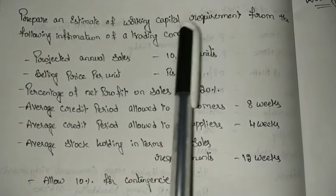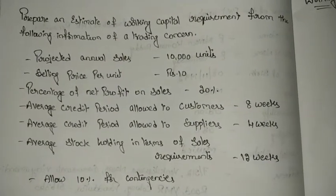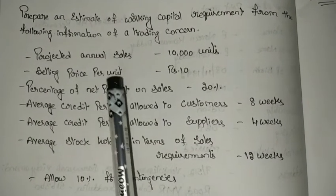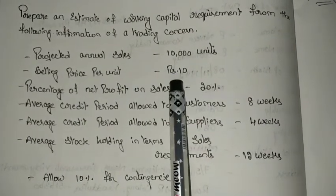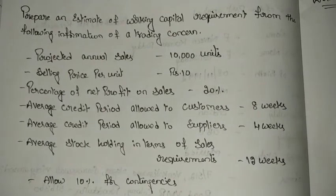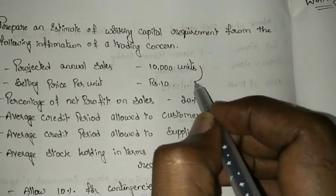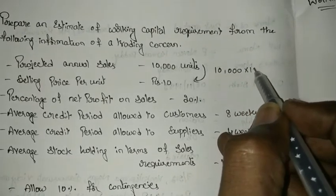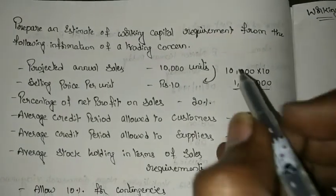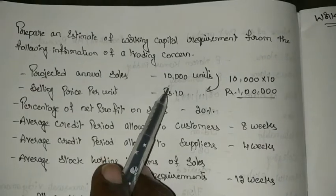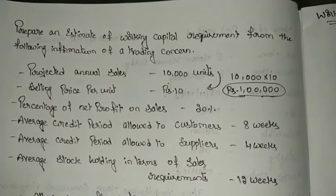Here, prepare an estimate of working capital requirement from the following information of a trading concern — not a manufacturing concern. The given information is: projected annual sales 10,000 units, selling price per unit 10 rupees. If you multiply these two, you get the total sales amount of 1 lakh rupees. They are separately giving units and selling price, so the total sales in rupees is 1 lakh.